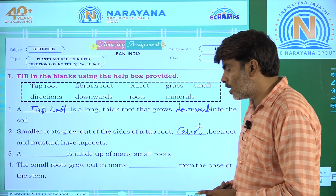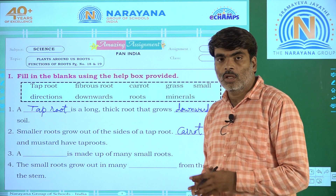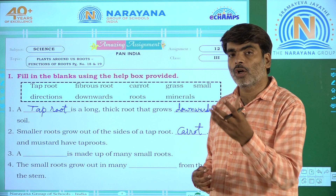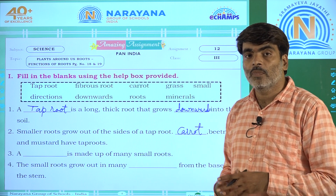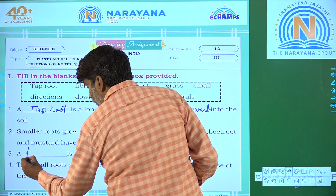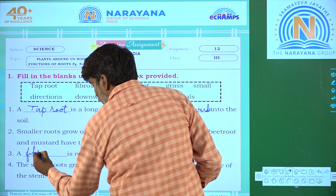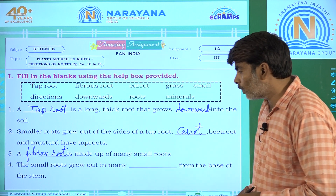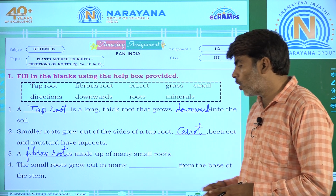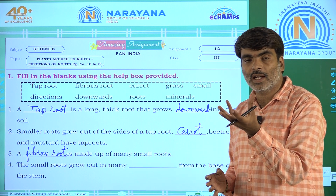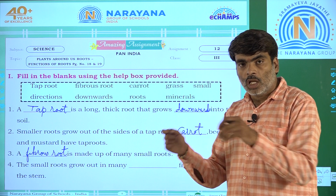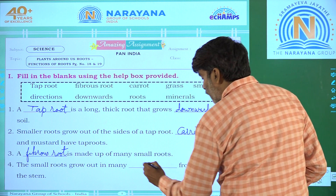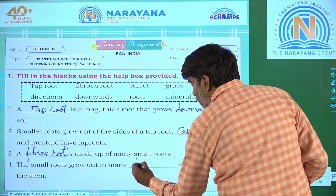A dash is made up of many small roots. From the base of the root, many small roots grow. We can take the example of grass, paddy, or wheat. These are fibrous roots. The small roots grow out in many directions — from the base, they grow sidewards in all directions.